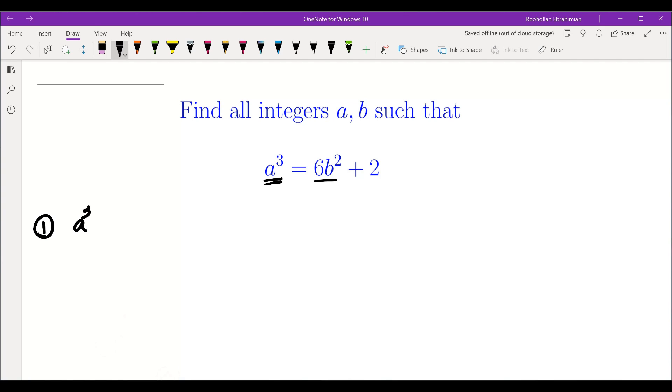So first I subtracted 8 from both sides. So that gives me a cubed minus 8 on one side and then 6b squared minus 6 on the other side. So the left side can be factored a minus 2, a squared plus 2a plus 4, and the right side can be factored as 6 times b minus 1 times b plus 1. And then I argued using parity of a and b and I got to a solution.